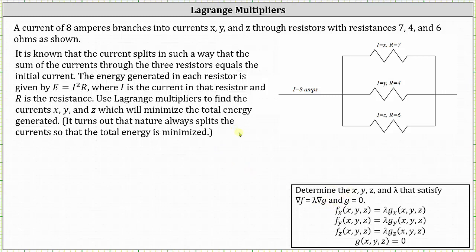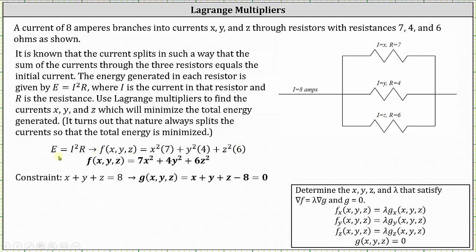Because we have three branches, using the equation E equals I squared times R, f of x, y, z is equal to I squared times R for the first branch, which is x squared times seven, plus I squared times R for the second branch, plus z squared times six. Simplifying, we have f of x, y, z equals seven x squared plus four y squared plus six z squared.